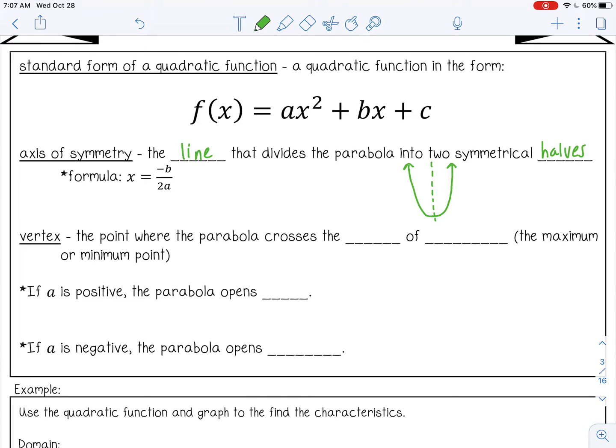The next is the vertex, and that is the point where the parabola crosses the axis of symmetry. It's also the maximum or minimum point of a parabola. So if I have a parabola, the vertex would be right here. Or if it's opening down, it would be up here, the max or the min.